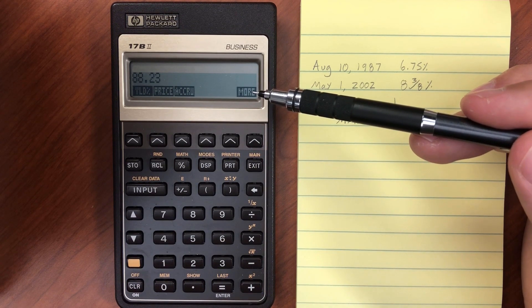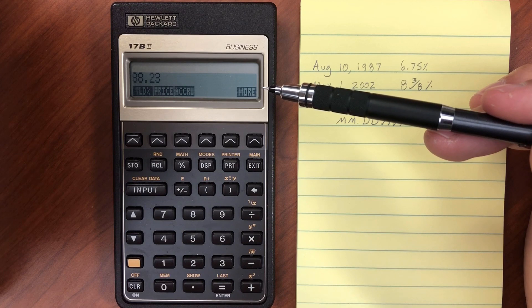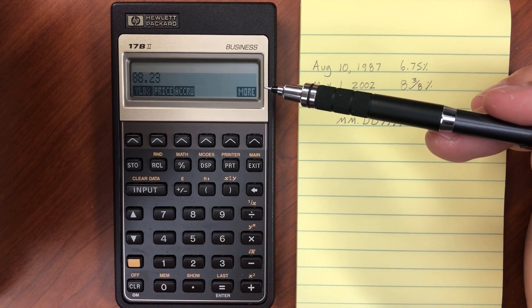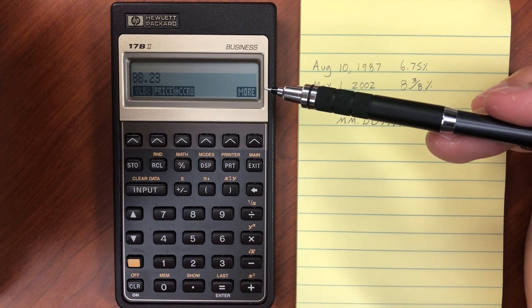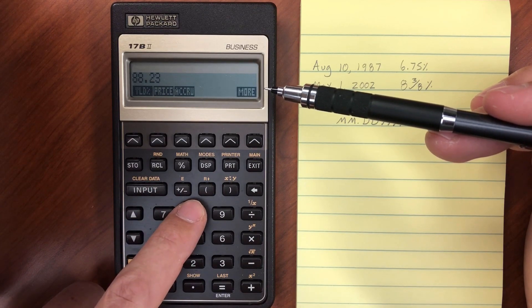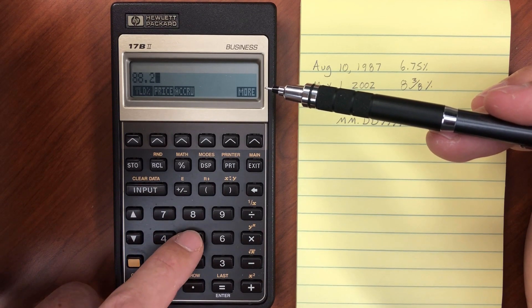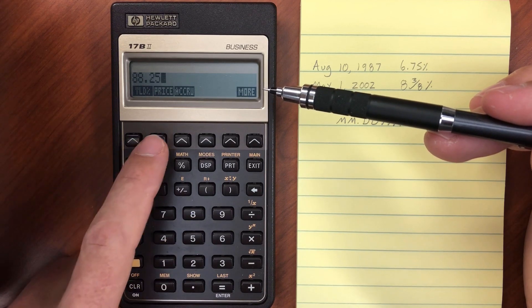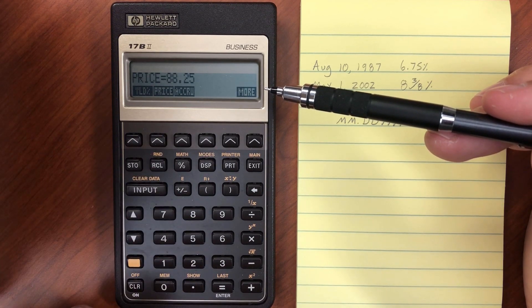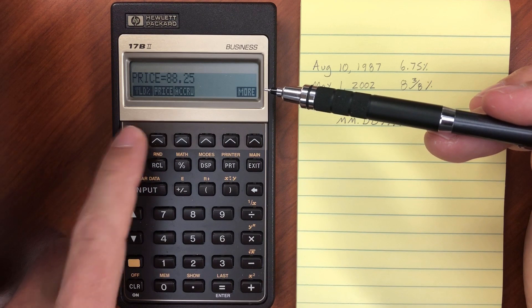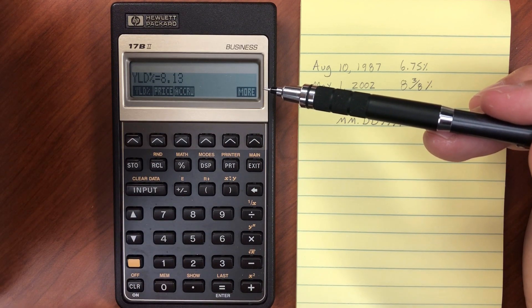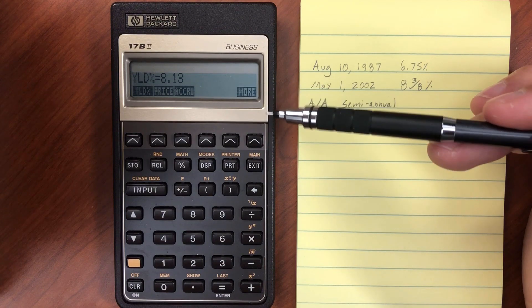So that's the net price. Now let's say that the market quote for the bond is 88.25. What yield does that represent? Enter 88.25 as the price and calculate yield. That gives us 8.13%, which is the yield to maturity.